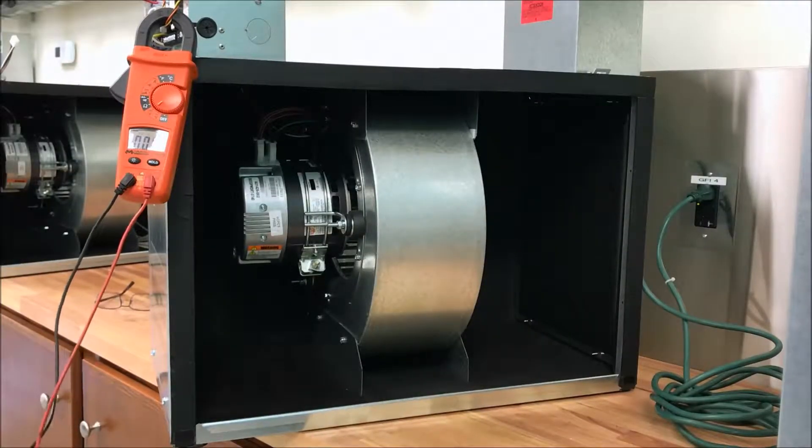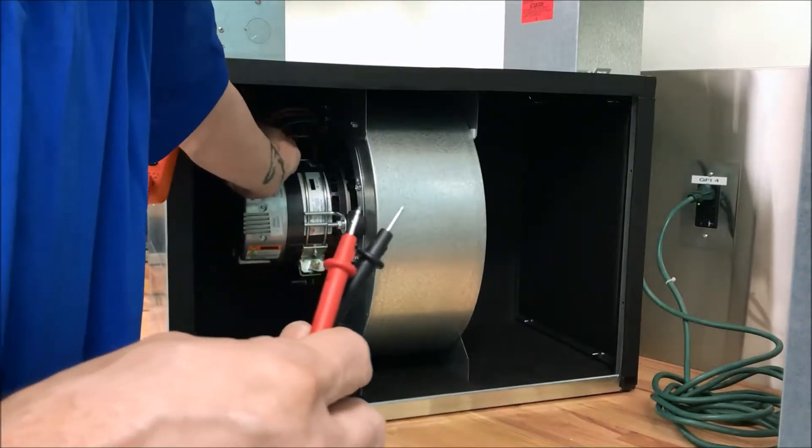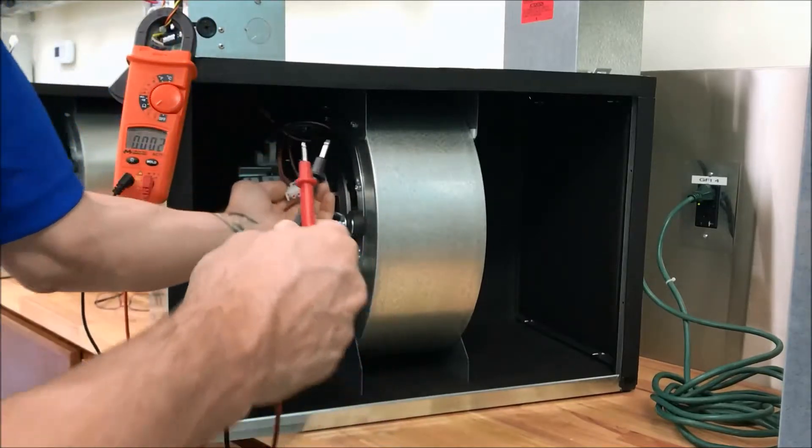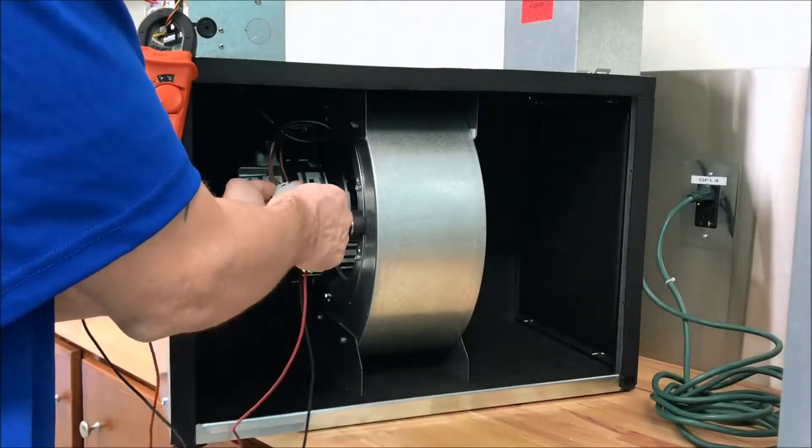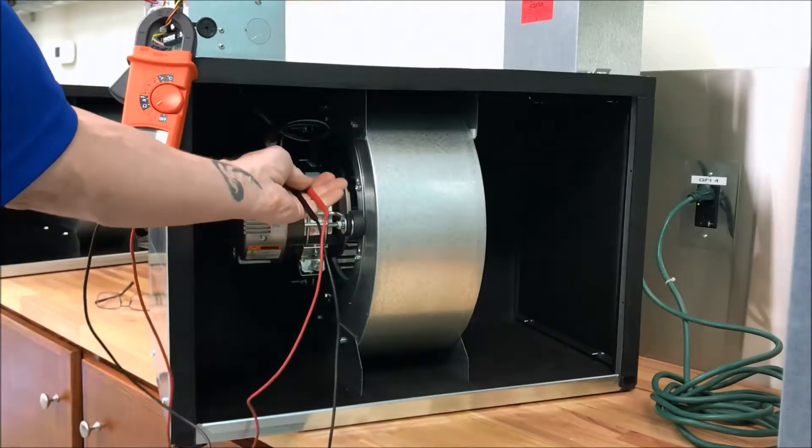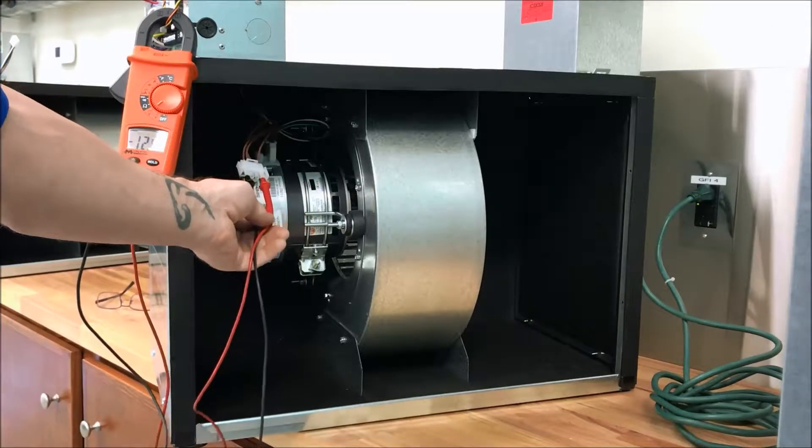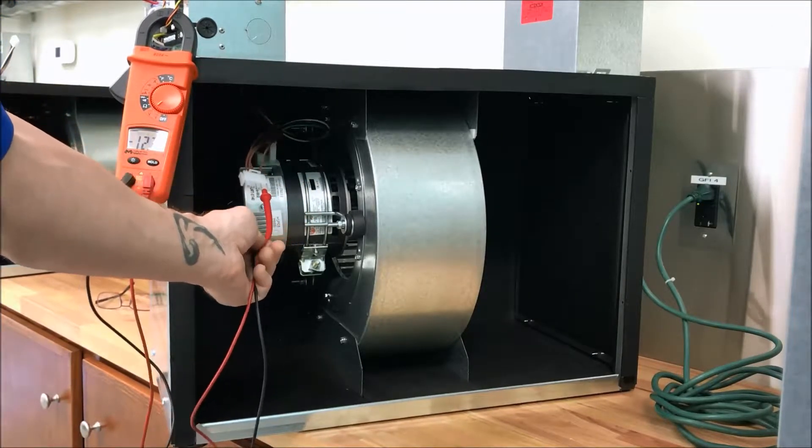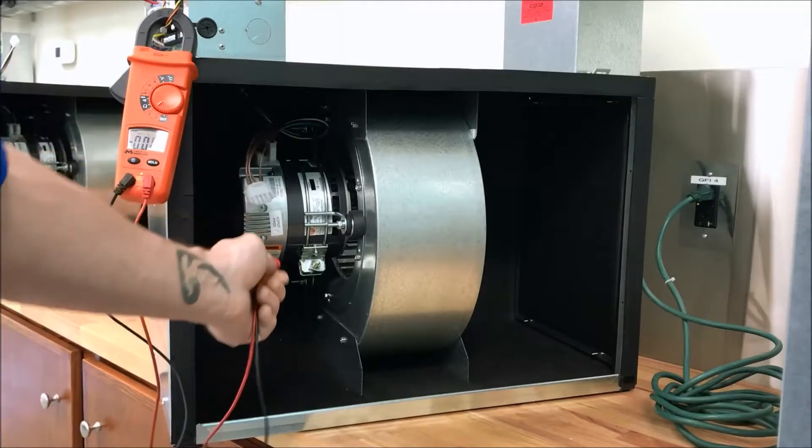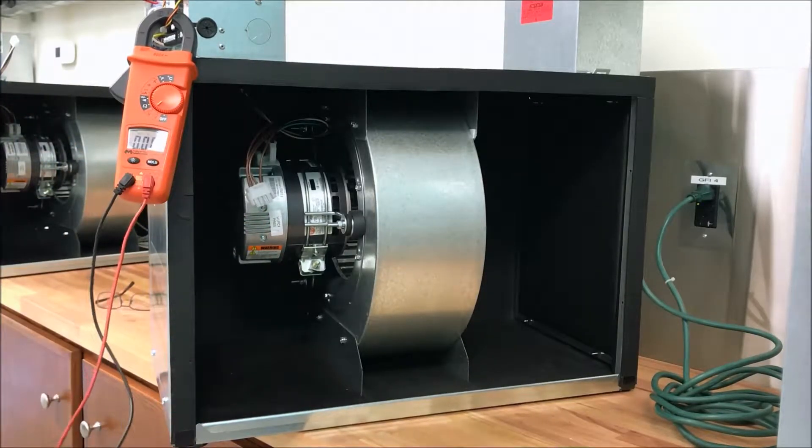Now our next troubleshooting step with the EC motor is to disconnect the wiring harness containing the brown wires off of the motor. We're going to check the outer two brown wires for 12 volts DC. If you do not have 12 volts DC here, we need to check the wiring harnesses and connectors back to the USB board and then from the USB board back to the smart control board to ensure it's not just a wiring harness problem.